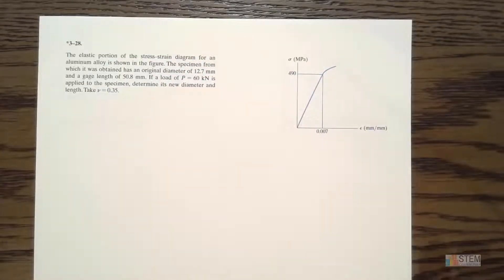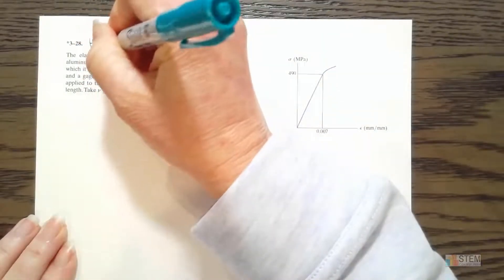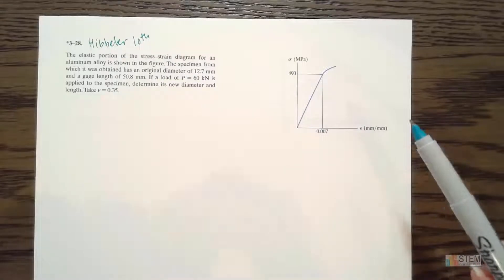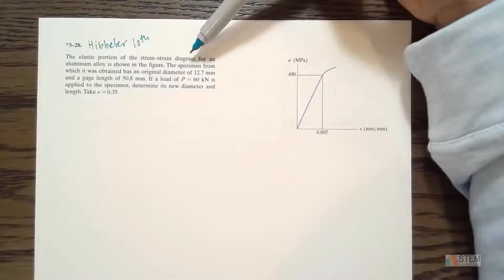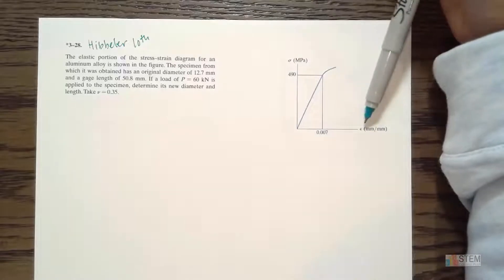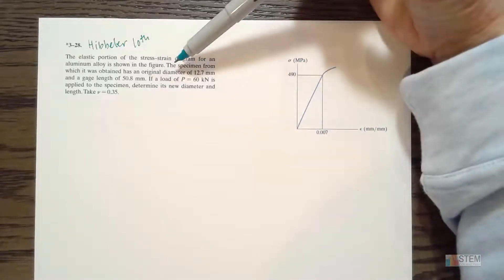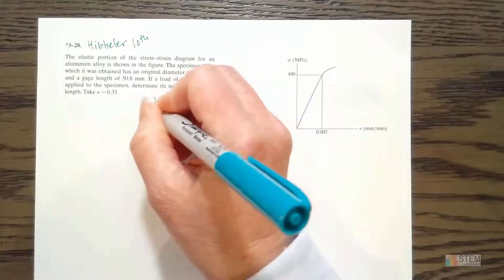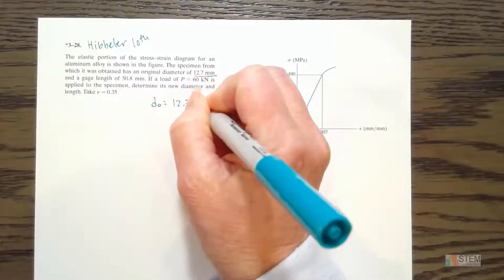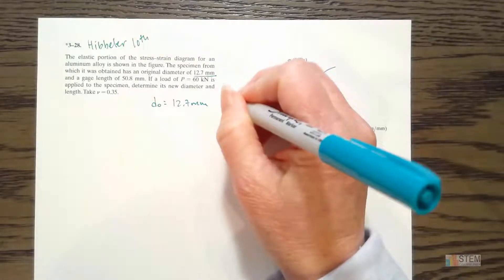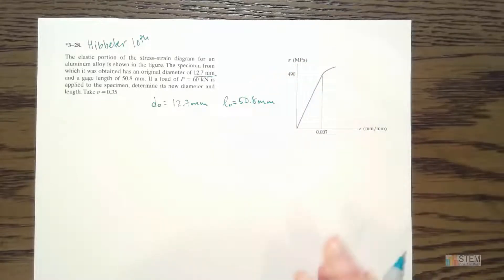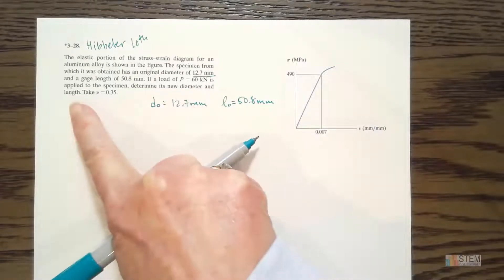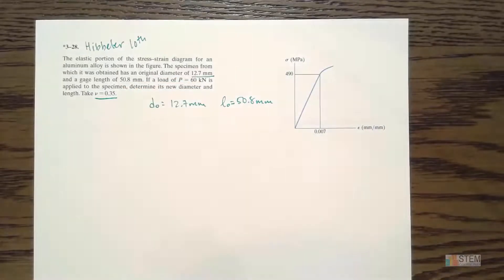Today we're doing problem 3-28 from Hibbler's Mechanics of Materials, 10th edition. This problem relates to axial load material. We have the elastic portion of a stress-strain diagram for an aluminum alloy, with normal stress on one axis and strain epsilon on the other. The specimen has an original diameter d₀ = 12.7 millimeters, a gauge length of 50.8 millimeters, a load P = 60 kilonewtons, and Poisson's ratio ν = 0.35. We want to find the new diameter and new length.